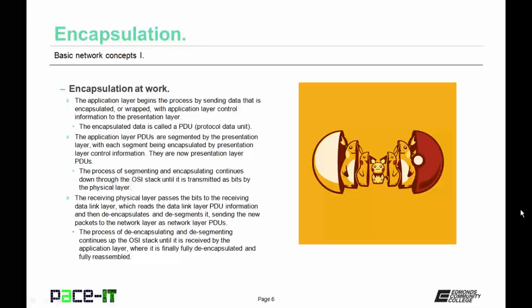The receiving physical layer passes the bits to the receiving data link layer, which reads the data link layer PDU information, and then de-encapsulates and de-segments it, sending the new packets to the network layer as network layer PDUs. The process of de-encapsulating and de-segmenting continues up the OSI stack until it is received by the application layer, where it is finally fully de-encapsulated and fully reassembled. This encapsulation and de-encapsulation allows differing systems to be able to communicate together effectively.